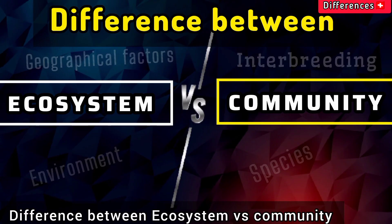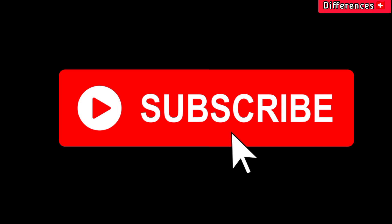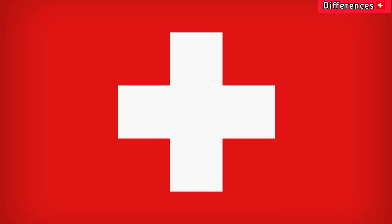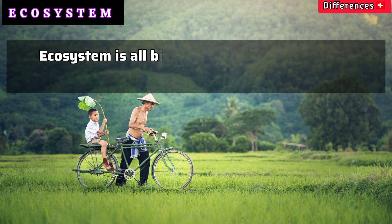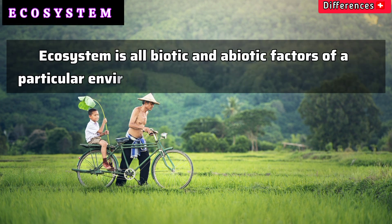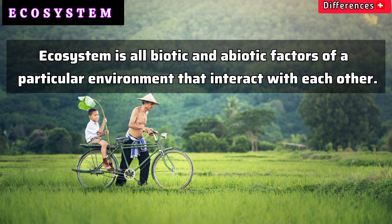In this video, we will explain the difference between ecosystem versus community. An ecosystem is all biotic and abiotic factors of a particular environment that interact with each other.